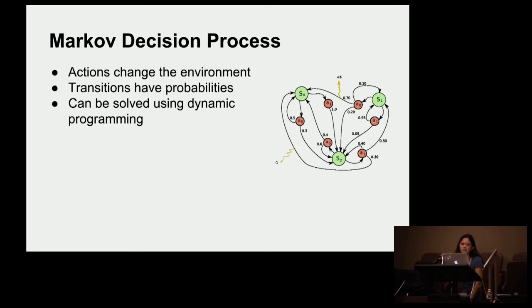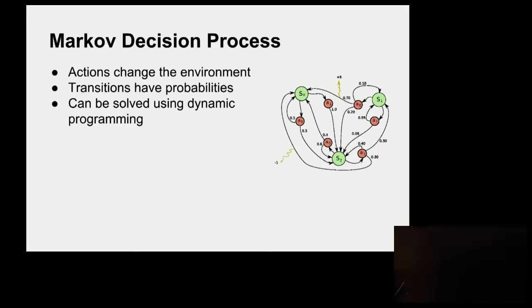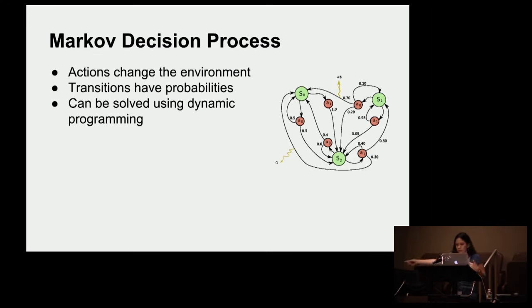So this ultimately relies on this idea called Markov decision processes. A Markov decision process basically means that what you do changes the environment you're in. So if I move to the right, you can't hear what I'm saying anymore, right? Now I'm back here. Now you can hear what I'm saying. So my state of the world has now changed by moving over to the right. These transitions have probabilities. So if you take an action, things might, you hope that things will happen in your favor, but that doesn't necessarily mean it's going to happen that way. And these state transitions using your actions can be solved for optimality using dynamic programming, if you remember dynamic programming from your CS classes.